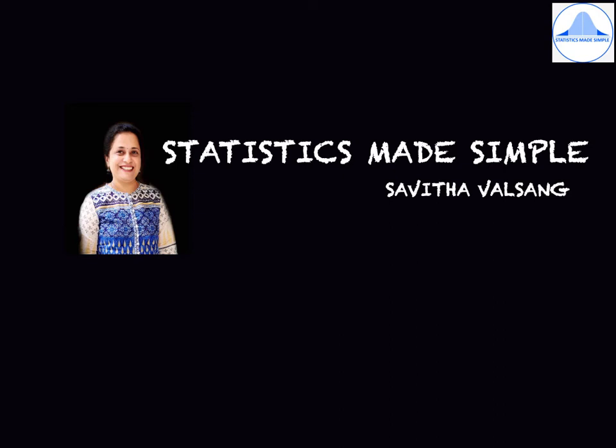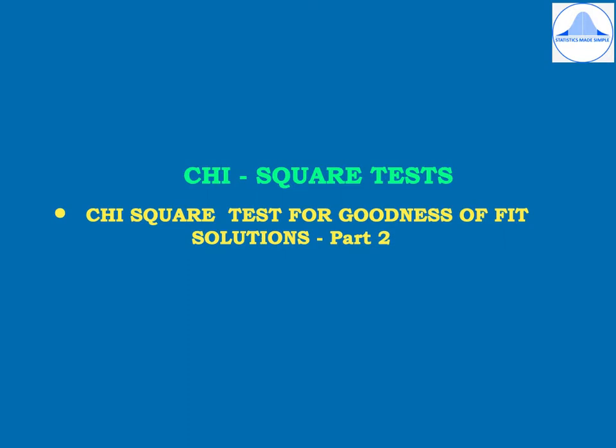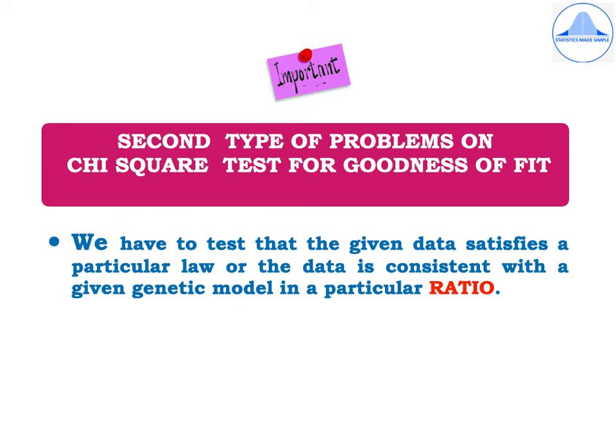Welcome back to Statistics Made Simple, I am Savita Valsang. In this video, I will find solutions to some more problems based on the chi-square test for goodness of fit, part 2. My focus is on the second type of problems where we have to test that the given data satisfies a particular law or the data is consistent with a given genetic model in a particular ratio.